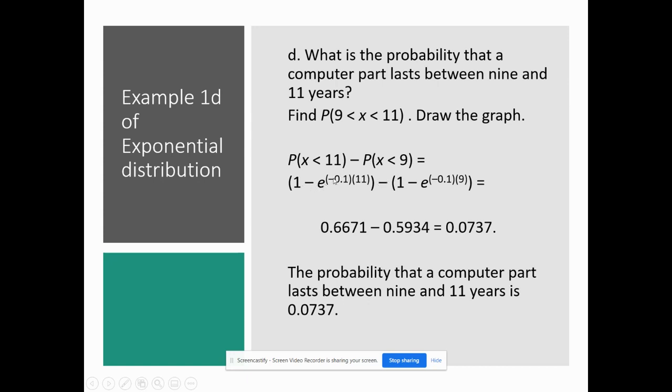So right here, 1 minus e raised to the negative 0.1 times 11 minus 1 raised to the e minus 0.1 times 9. I'm going to tell you again – do this part first and then subtract it from 1. Then do this part first, subtract it from 1, and then do this minus that. Do it in parts. If not, you're going to get some wonky answers.